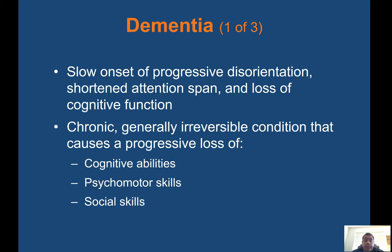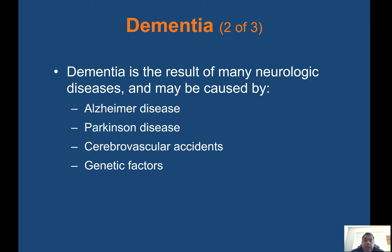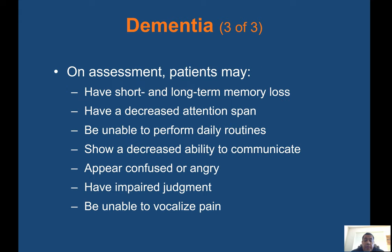Dementia is a slow onset of progressive disorientation, shortened attention span, and loss of cognitive function. It is a chronic, generally irreversible condition causing progressive loss of cognitive abilities, psychomotor skills, and social skills. Dementia may be caused by Alzheimer's disease, Parkinson's disease, cerebrovascular accidents (CVAs), or genetic factors. On assessment, patients may have short- and long-term memory loss, decreased attention span, inability to perform daily routines, decreased ability to communicate, appear confused or angry, have impaired judgment, and be unable to vocalize pain.